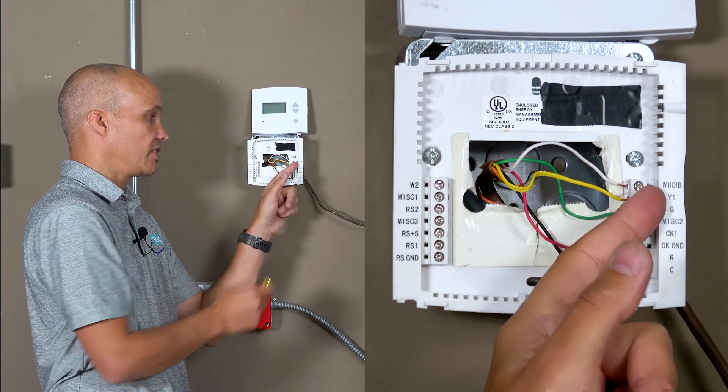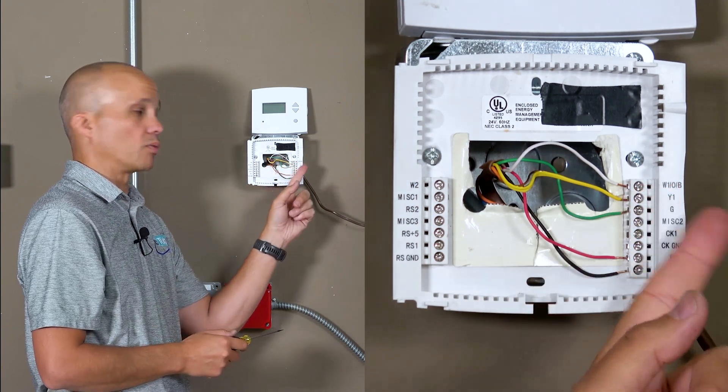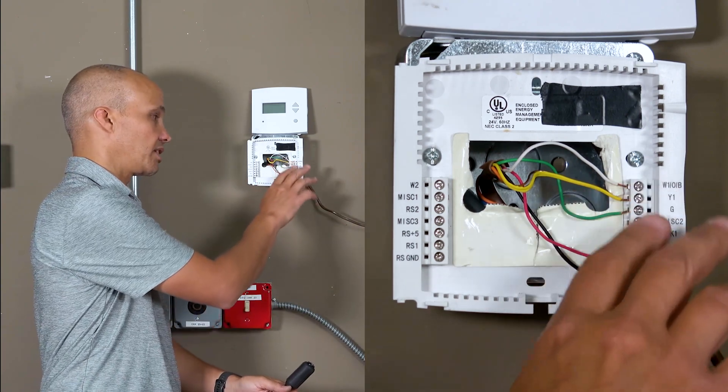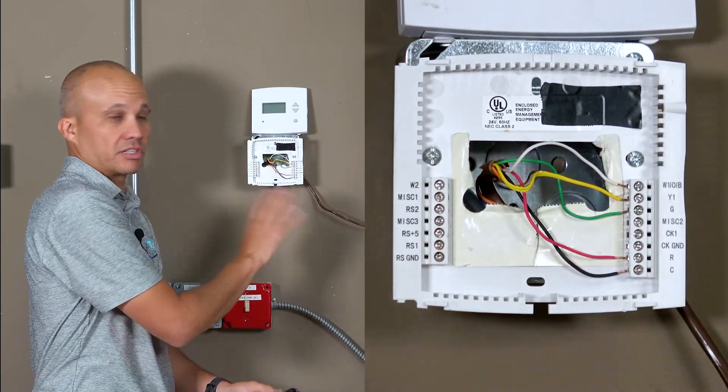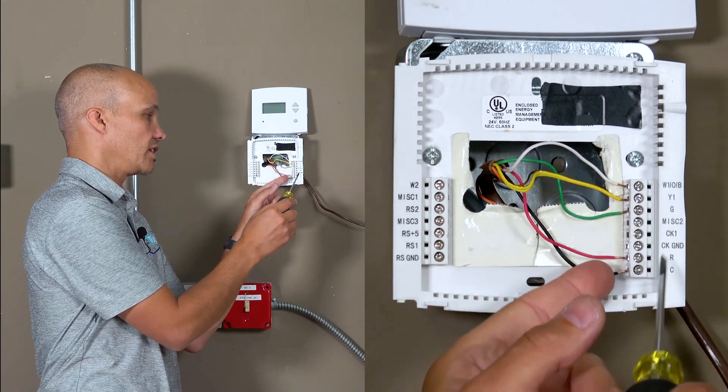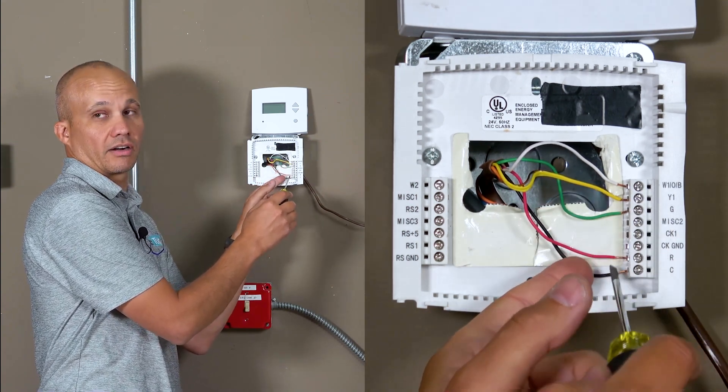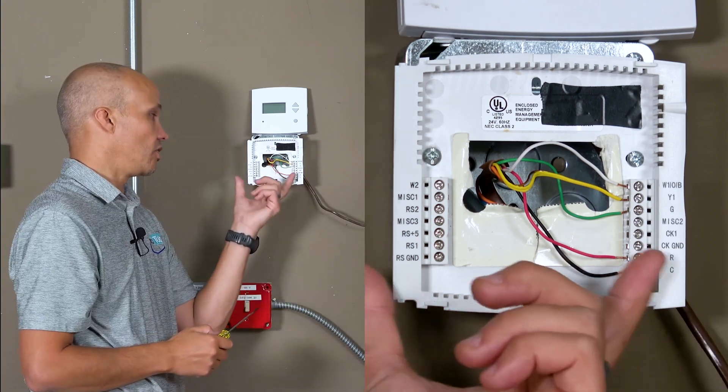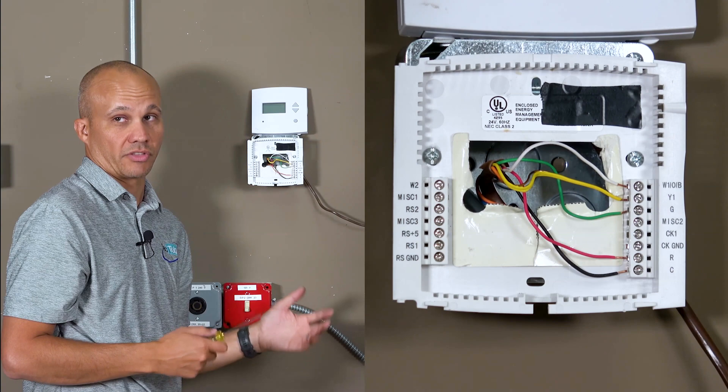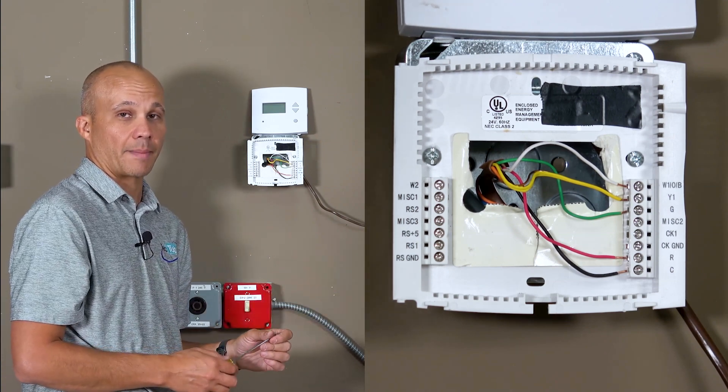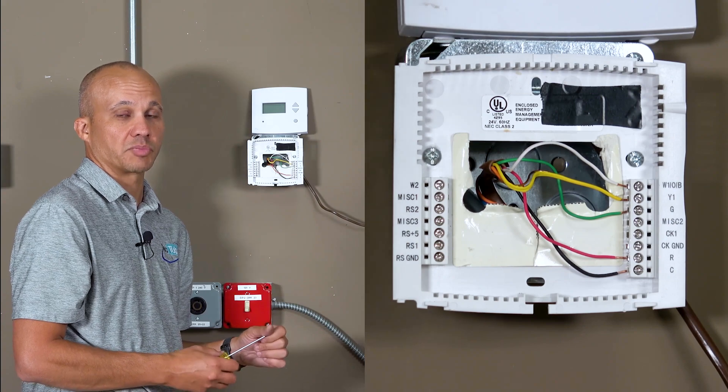Down here on this stat it happens to be labeled W1 slash OB. In our application we only need the W, so we're going to pick W. OB is a different application, you program the stat differently. Yellow is going to Y1, green to G, red to R, and then we have black going to common. We've got to match those five up. You'll notice this stat has plenty of other wires on here that we're not using, other terminal spots. Those are for different applications. That's fairly common that you're not using everything of the specific models that you've chosen.